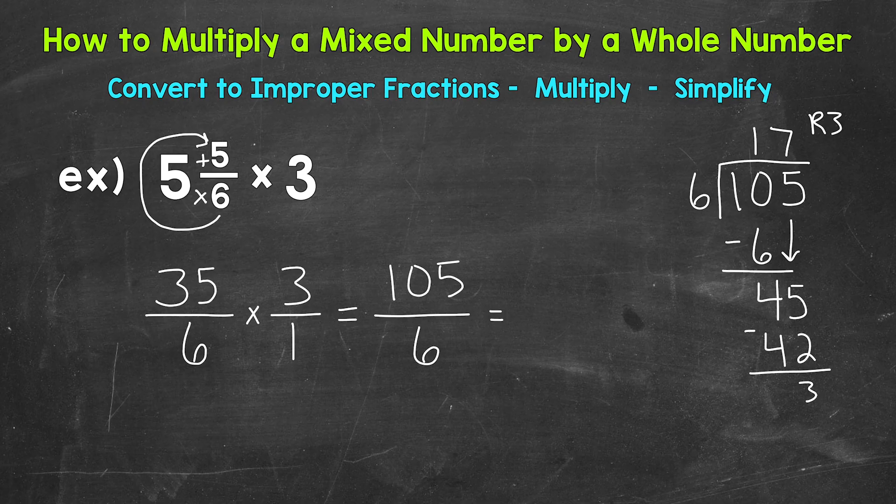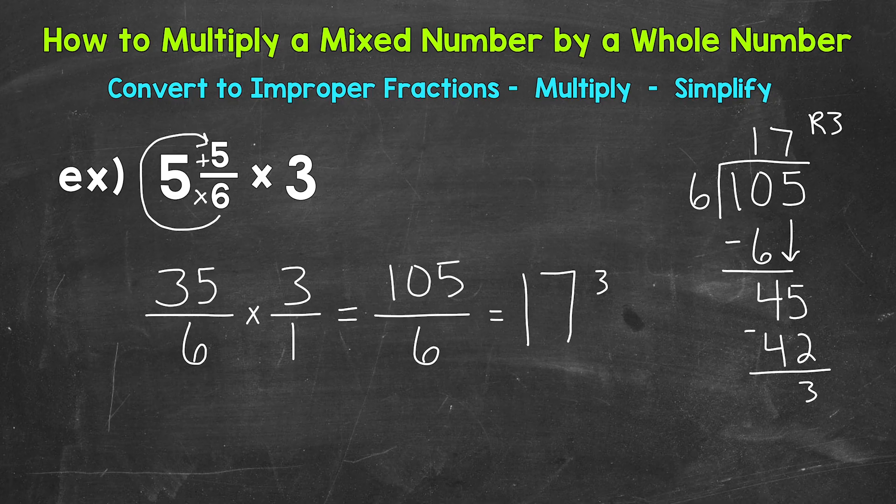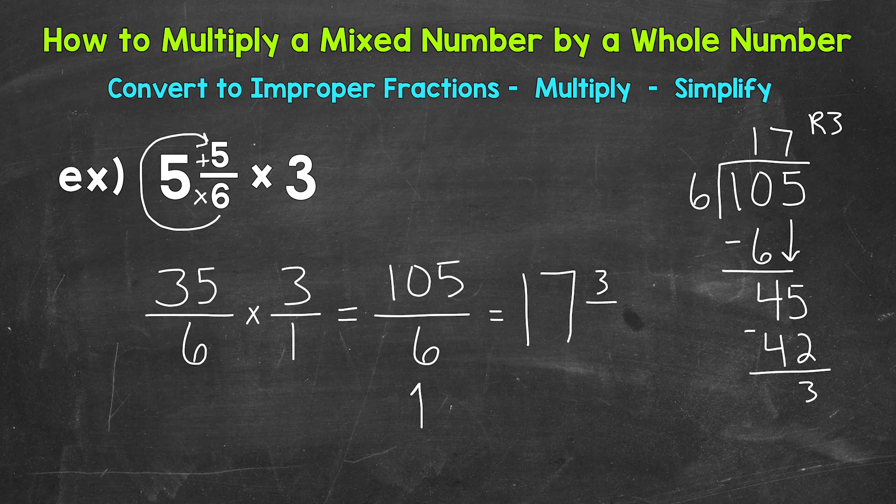So 17 whole groups of 6 out of 105. That's going to be our whole number portion of the mixed number. Now we had a remainder of 3. That's going to be the numerator of the fractional part of our mixed number. And then we keep our denominator of 6 the same. So we get 17 and 3 sixths.